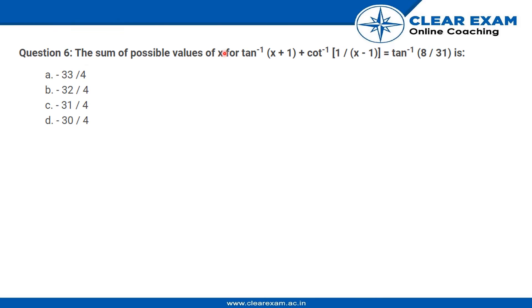The question is: the sum of possible values of x for tan inverse (x + 1) plus cot inverse 1 upon (x - 1) is equal to tan inverse 8 upon 31. So we can find this by converting this entire equation into something with tan inverse.